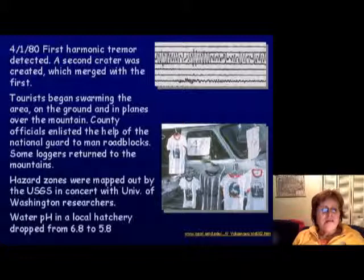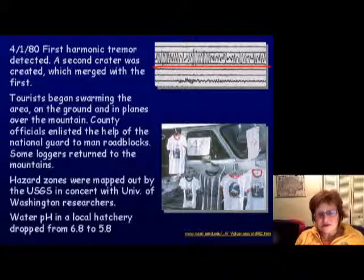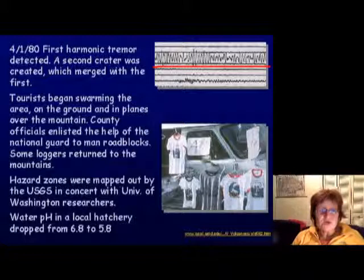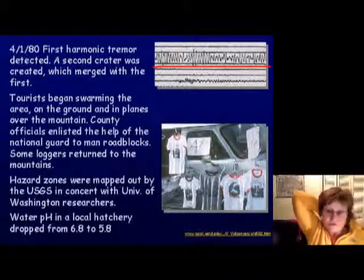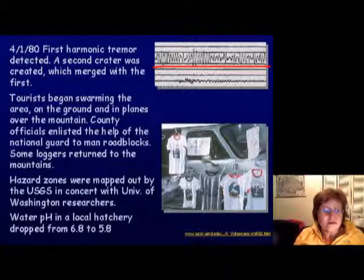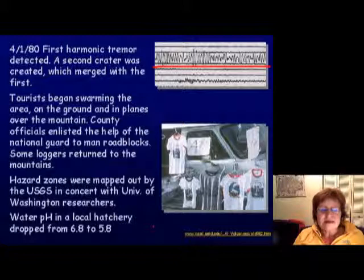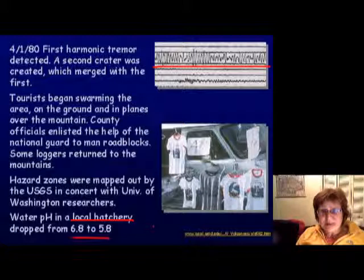April 1st brought the first harmonic tremor and a second crater. Tourists wanted to come see the eruption, but roadblocks were put in and roads were closed. Hazard zones were mapped. A local hatchery recorded pH dropping from 6.8 to 5.8 — that's a tenfold increase in acidity — from volcanic outgassing of hydrochloric acid, hydrofluoric acid, CO2, and carbon monoxide.